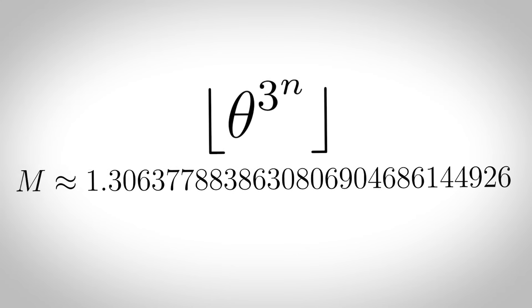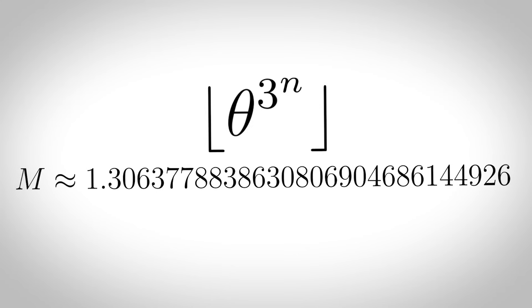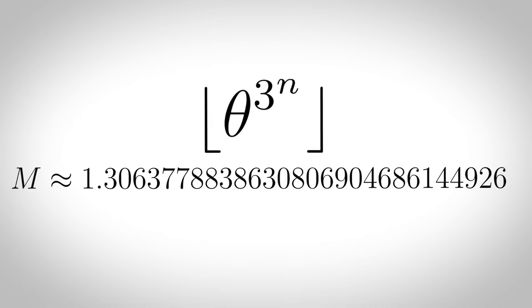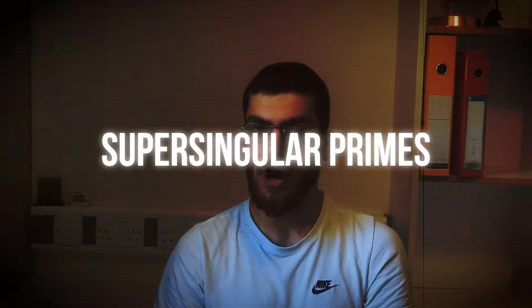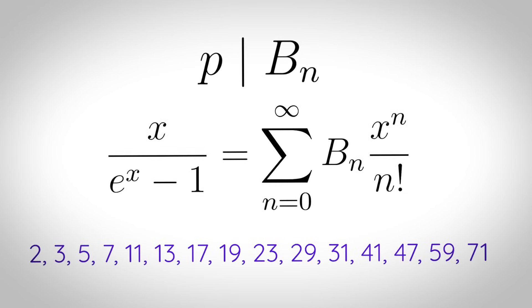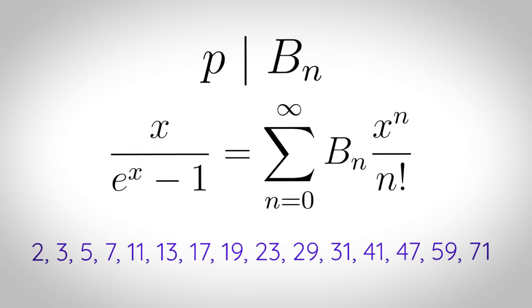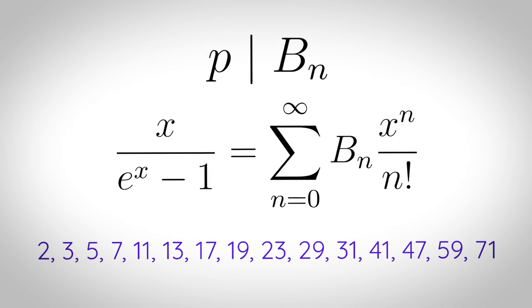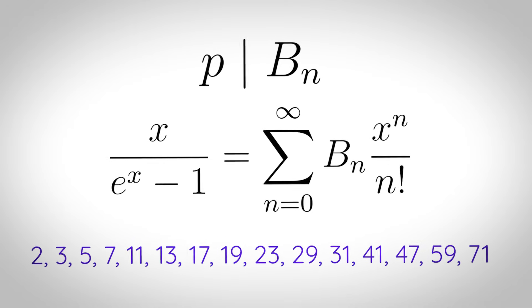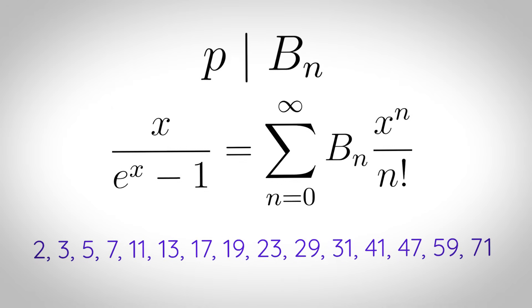Mills primes: primes of the form floor of theta to the 3 to the n, where theta is Mills constant. Weirdly this always gives a prime number. Mills constant is roughly 1.3063. Supersingular primes: a prime p is a supersingular prime if it divides the numerator of a certain Bernoulli number, where the Bernoulli numbers are coefficients b sub n of a specific equation. There are exactly 15 supersingular primes.